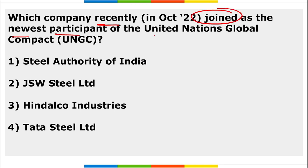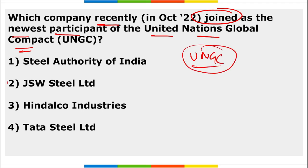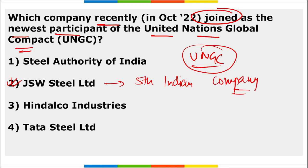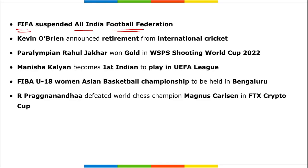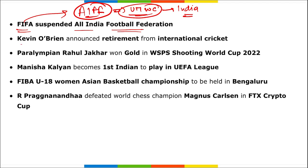JSW Steel Limited joined the UN Global Compact (UNGC) as its fifth Indian company in the industrial mining and manufacturing category. JSW Steel's headquarters is in Mumbai, founded in 1982, with Sajjan Jindal as chairman. FIFA had suspended the All India Football Federation, but the suspension has since been lifted. As a result, the Under-17 Women's World Cup will be held in India.